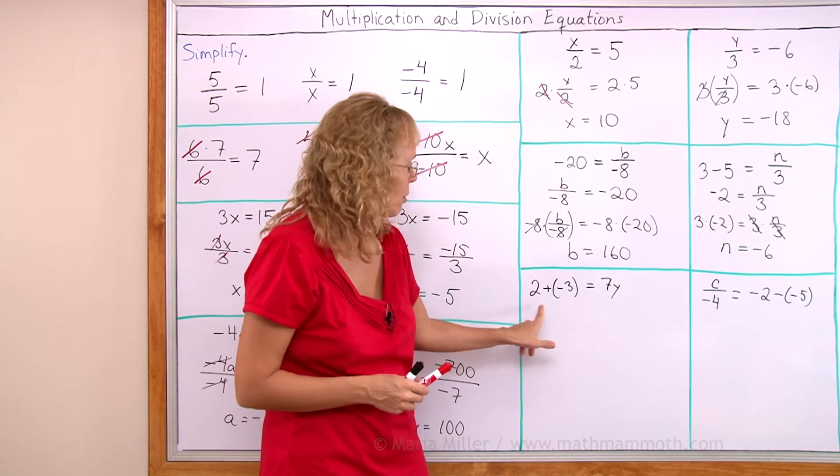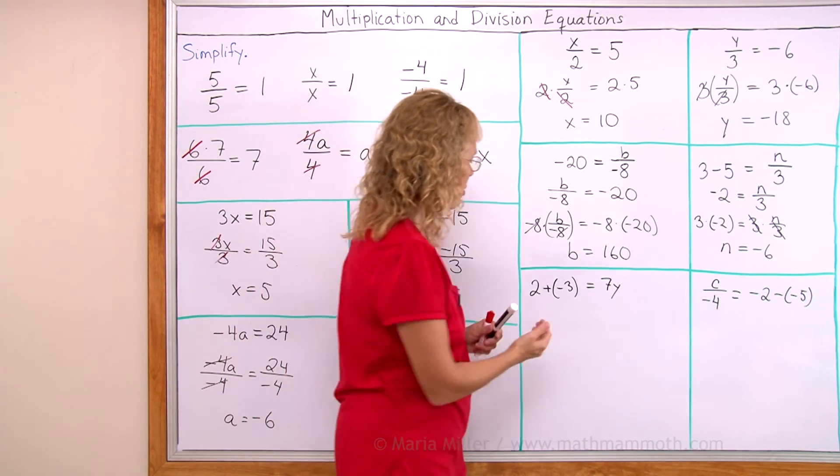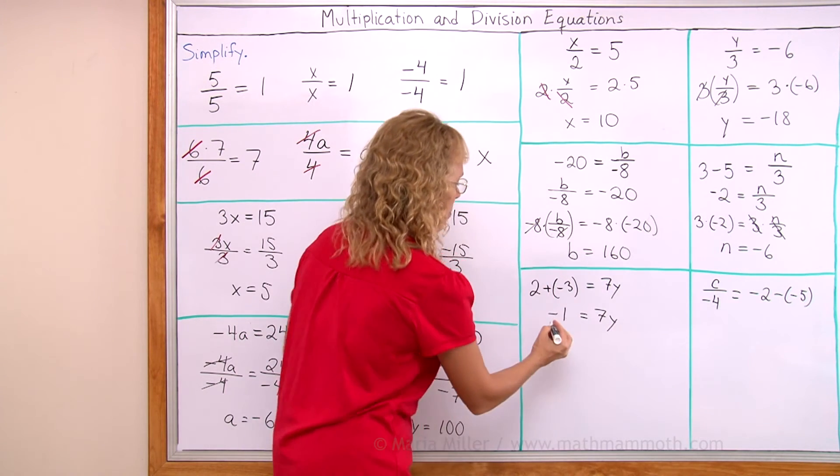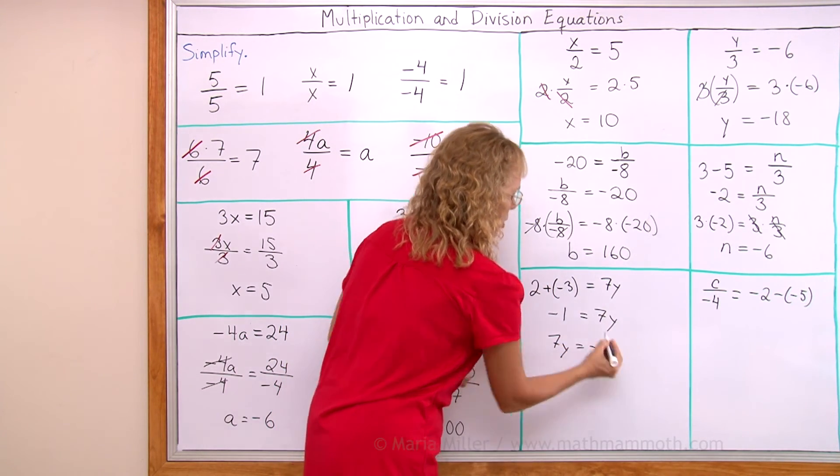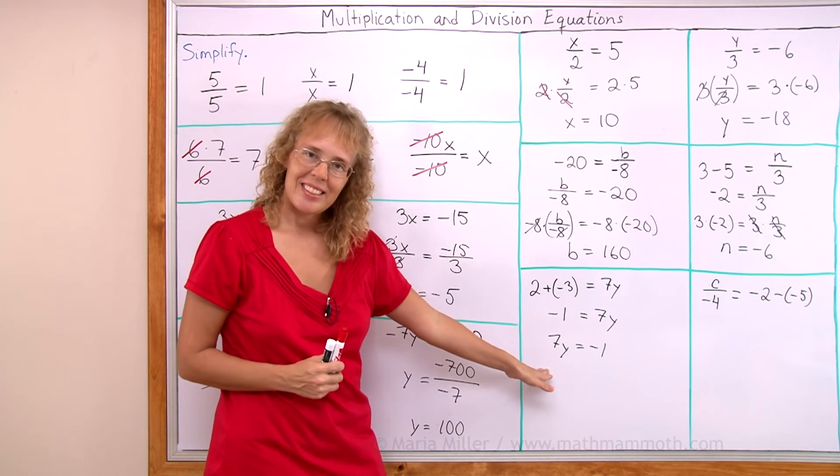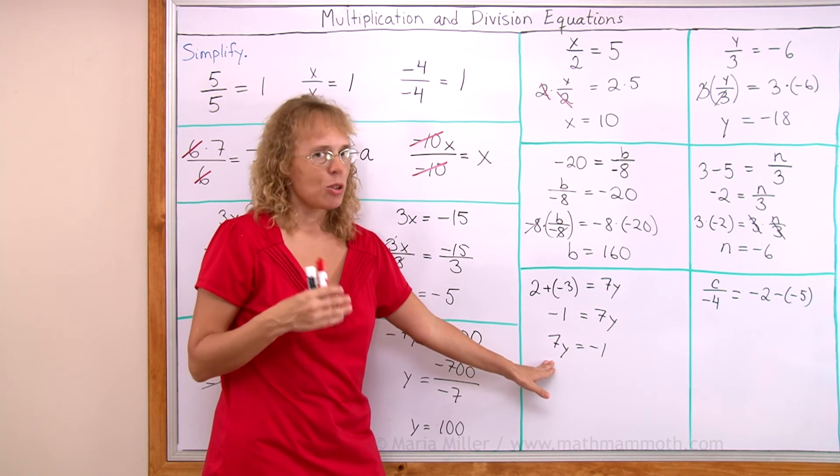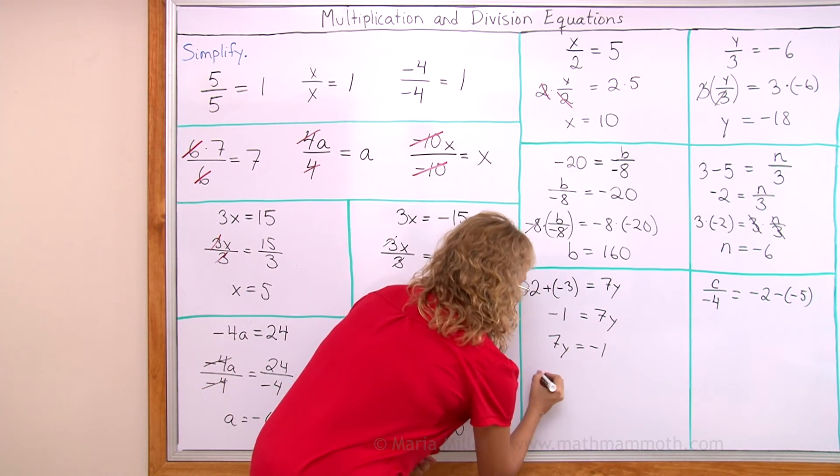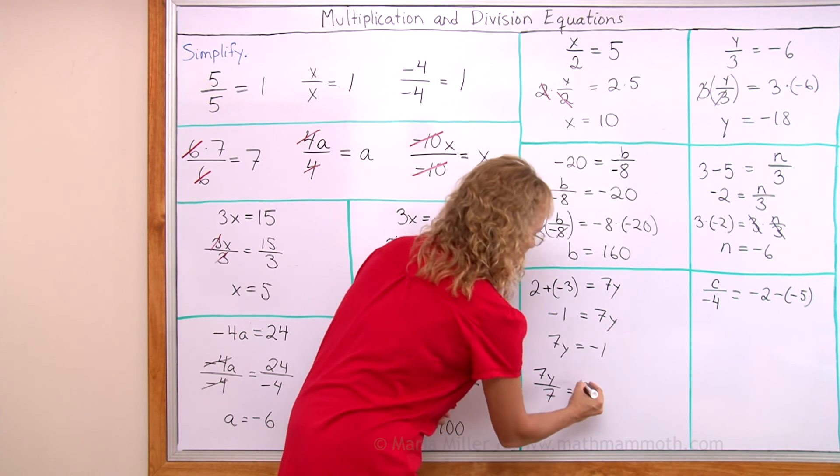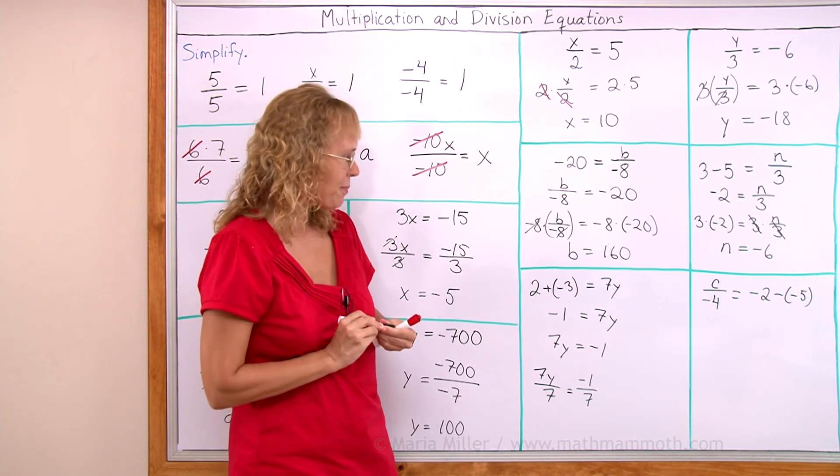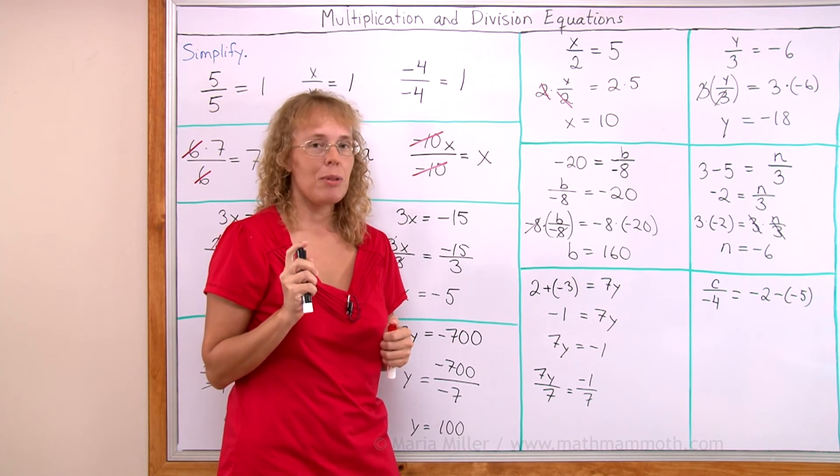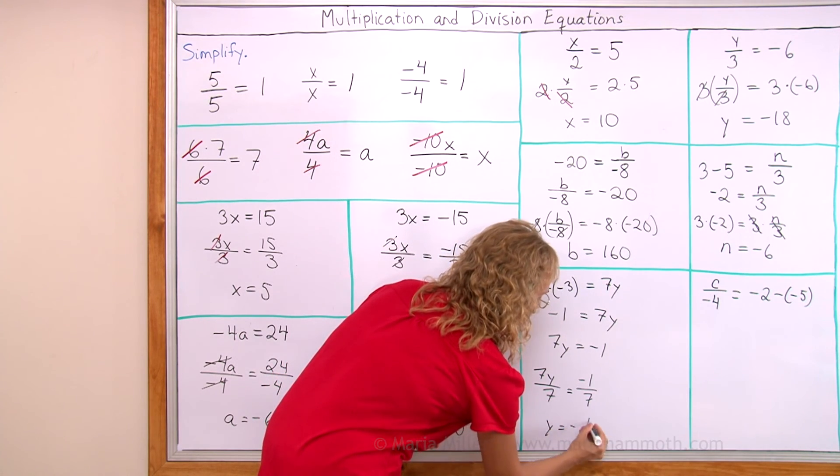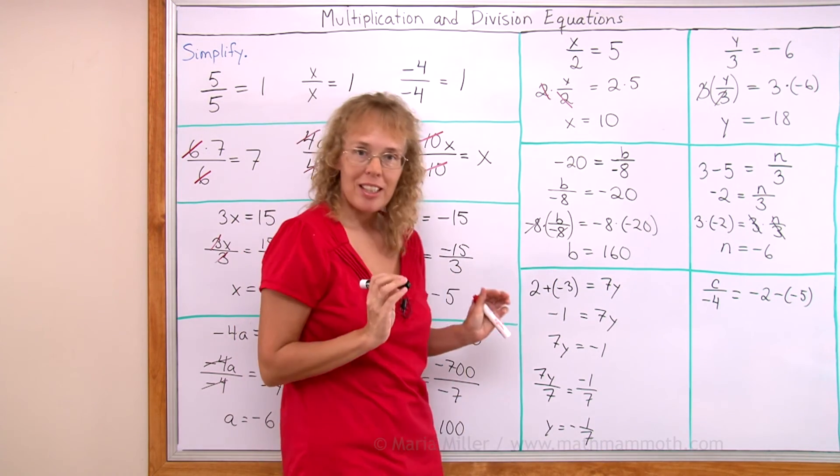Over here, the same situation. We have seen here something that we can calculate or simplify. So let's do that. 2 plus negative 3. Well, that's negative 1. Let me flip the sides now. So you can see clearly what's going to happen next. What do we do next? The variable is multiplied by 7. So to undo that, to get y alone, we need to divide both sides by 7. Right. So 7y divided by 7. And then over here, negative 1 divided by 7. What's that going to be? You will study this more in a little bit, in a lesson that's coming up soon. But this is basically, it's a fraction. It's a negative fraction. y equals negative 1 seventh. Nothing wrong with that. Everything works just fine.